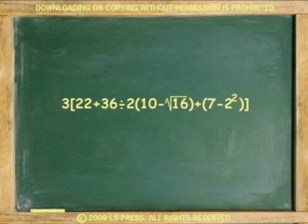One last example. Here, do square root and exponent first. Square root of 16 is 4, and 2 squared is 4. Next, eliminate parentheses. 10 minus 4 is 6, and 7 minus 4 is 3.